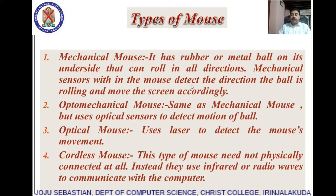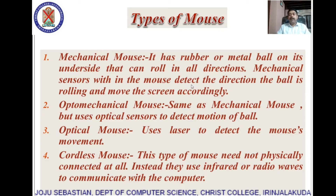The optomechanical mouse is the same as the mechanical mouse but uses optical sensors — light detecting sensors — to detect the motion of the ball. The ball under the mouse is still there, but its movement is detected by optical sensors, which is why it is called an optomechanical mouse.